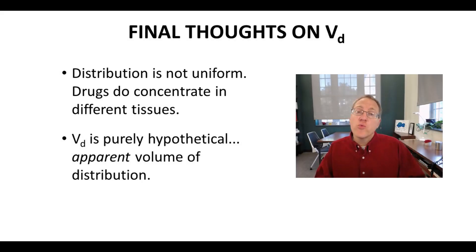I'd like to close with just a couple final thoughts on volume of distribution. One, distribution is not uniform. A drug is not uniformly in a tissue. It may concentrate in skin and not muscle, or it may concentrate in bone but not fat. So drugs have different properties, and they tend to concentrate in certain tissues. And that tissue may include the blood. Maybe it concentrates in the plasma.